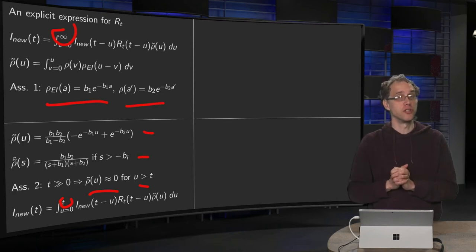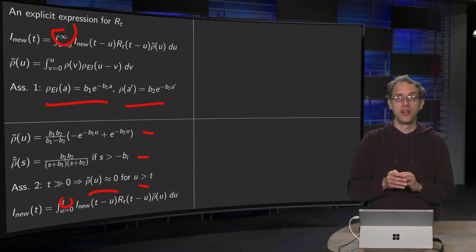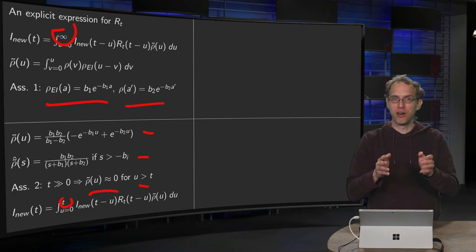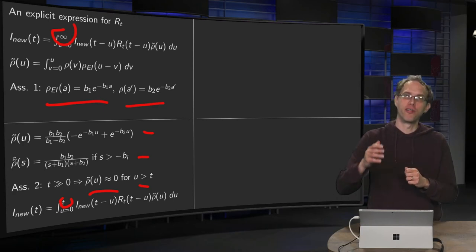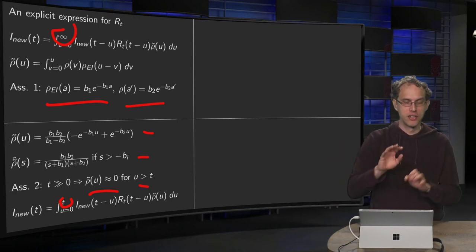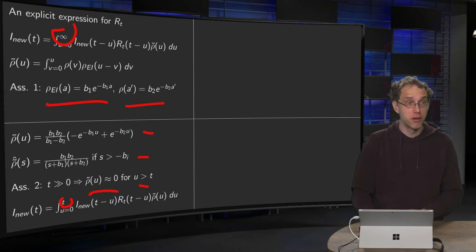This assumption is also perfectly fine because you will need epidemic data anyway. So you cannot determine Rt if your epidemic has been going on for two weeks or so. That's not going to work. However, if your epidemic has been going on for several months, then you are fine. So assumption two, technical assumption which is totally fine.